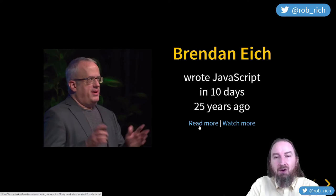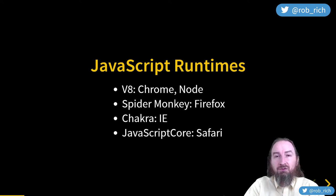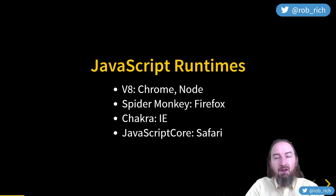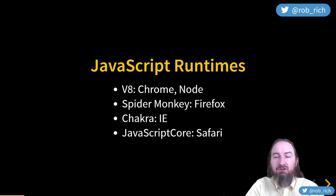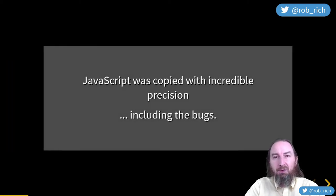The blue links in the slides from robrich.org link to additional information. We now have a bunch of JavaScript engines that are for the most part really high fidelity: V8 in Chrome, SpiderMonkey in Firefox, Chakra in Internet Explorer, and JavaScriptCore in Safari. Each of these JavaScript engines works pretty much the same — Brendan Eich's library was cloned with amazing fidelity.